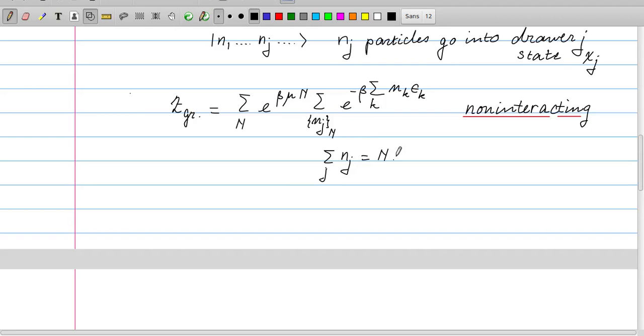So instead of summing over all the particle numbers, and then the way we can distribute that number of particles over the different draws, we can also sum in a different way. We can also sum first over the number of particles in draw one, between zero and infinity, if they would be bosons. For fermions, obviously, we cannot put more than one particle in state number one. Then there is a sum, n2 is zero to infinity, and so on. nj is zero to infinity.